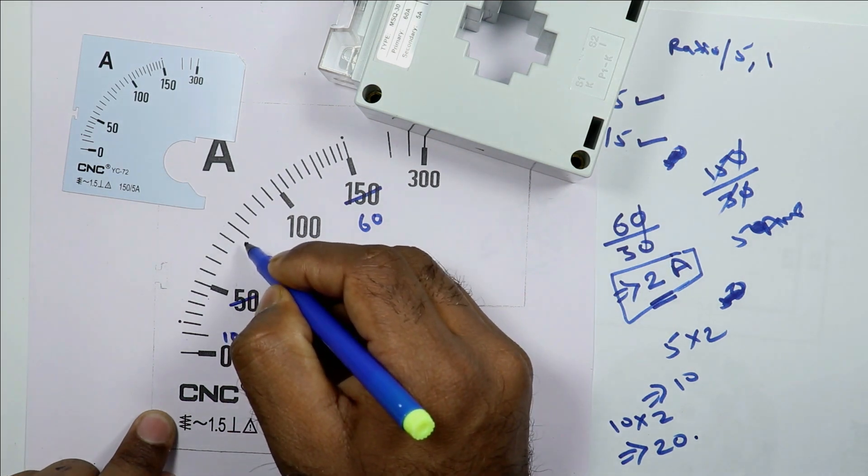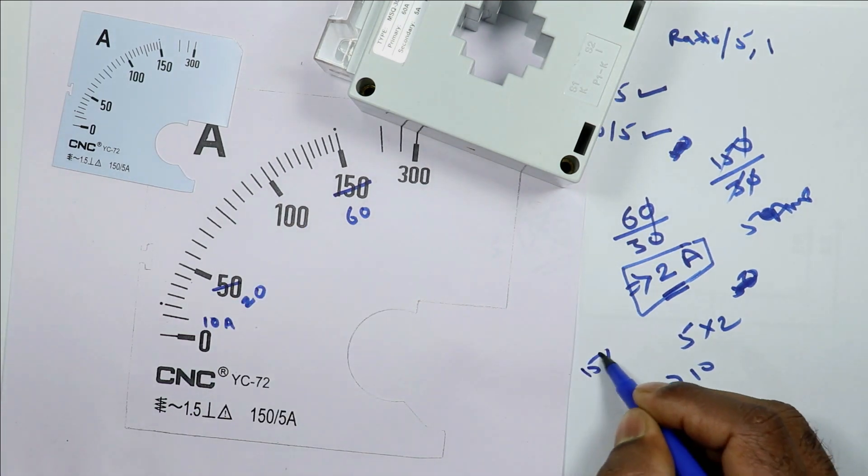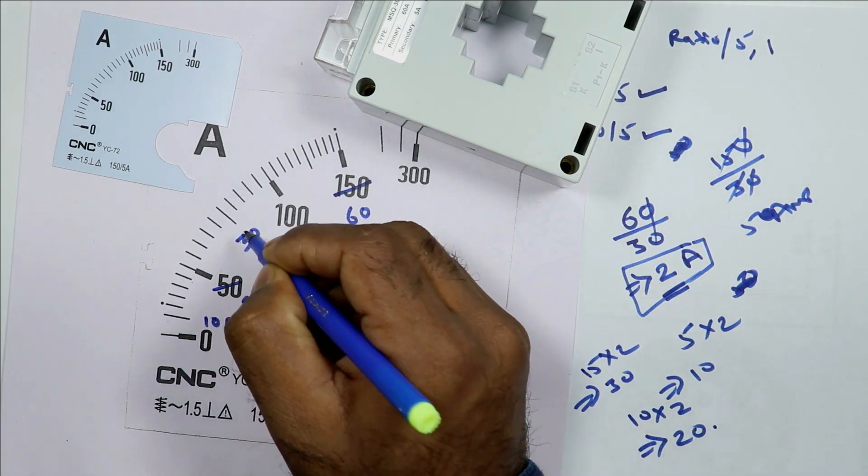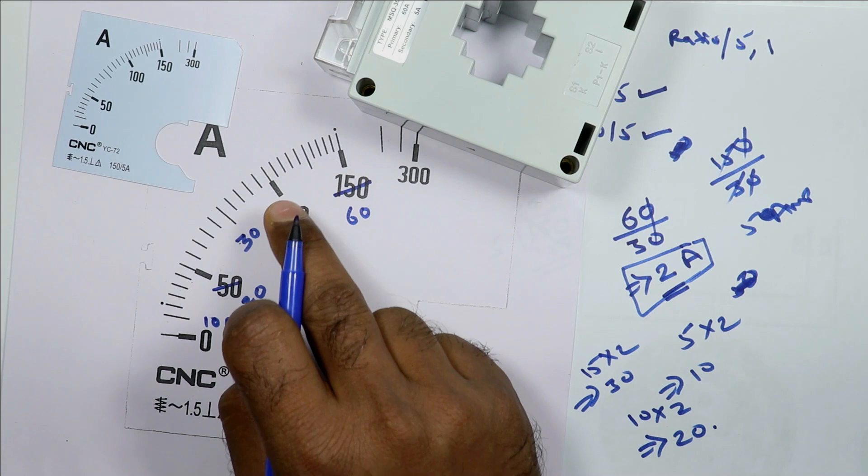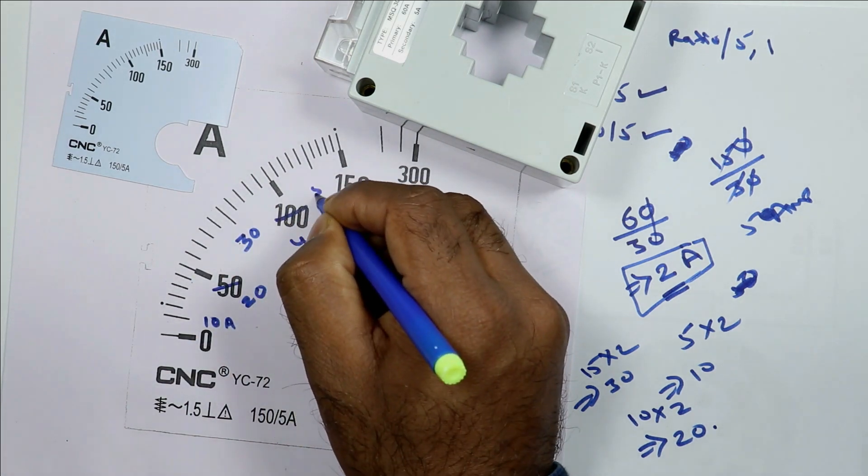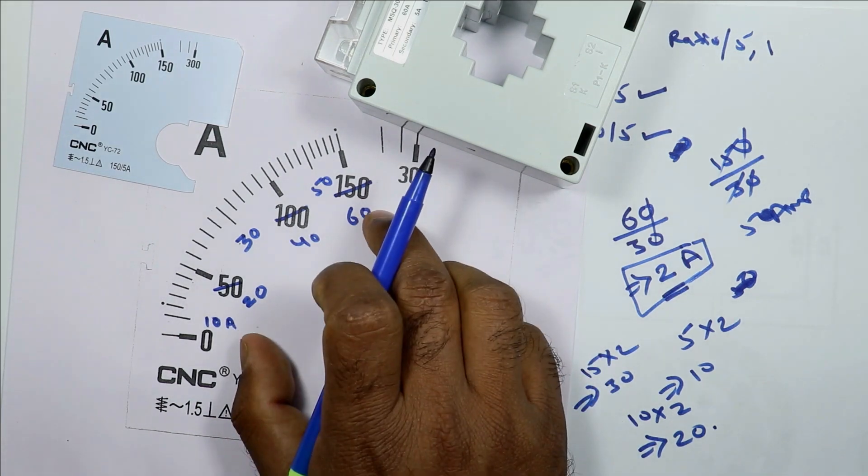This line is at 15, so I will multiply this by 2. Answer is 30. So this will be 30 ampere. Here it will be 20, so 20 into 2 equals to 40 ampere. Similarly at here 50 and at here 60 ampere.